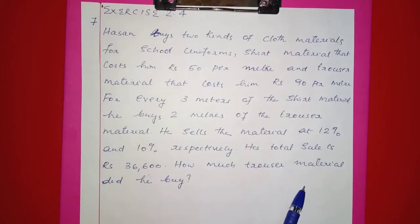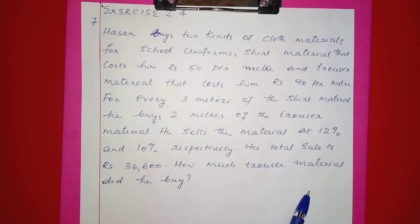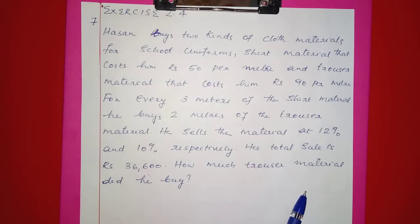Hassan buys 2 kinds of cloth materials for 4 school uniforms: shirt material that costs Rs.50 per meter and trouser material that costs Rs.90 per meter. For every 3 meters of the shirt material, he buys 2 meters of the trouser material. He sells the material at 12% and 10% profit respectively. His total sale is Rs.36,600. How much trouser material did he buy?